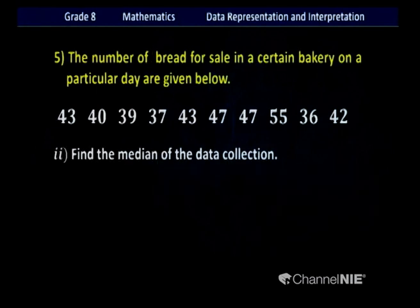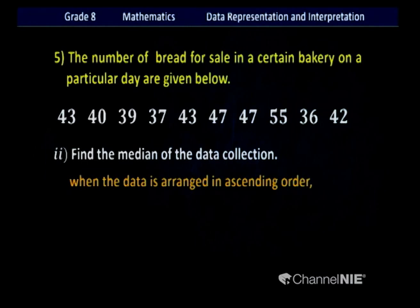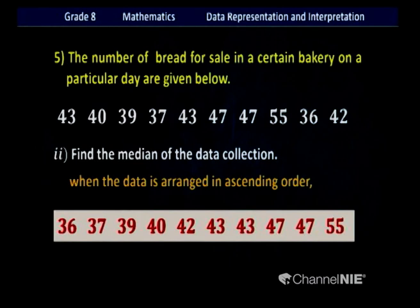Find the median of the data collection. We count the data: 1, 2, 3, 4, 5, 6, 7, 8, 9 and 10 — that means we have an even number of data. Therefore we cannot use the previous method. First arrange in ascending order: 36, 37, 39, 40, 42, 43, 43, 47, 47, 55.